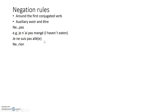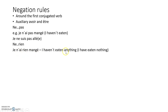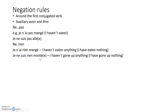Ne...rien, meaning 'nothing': je n'ai rien mangé — 'I haven't eaten anything.' Again, you've got the ne and rien around the auxiliary, and then the past participle. And with an être verb: je ne suis rien monté — 'I've not gone up anything.' The example shows that ne and rien go around the auxiliary verb être.